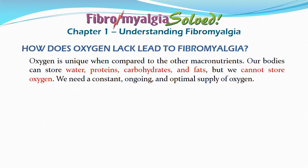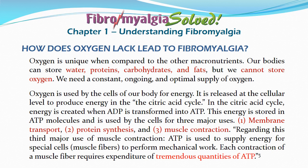These next quotes are from Guyton and Hall's Textbook of Medical Physiology. Oxygen is used by the cells of our body for energy — it is released at the cellular level to produce energy in the citric acid cycle. In the citric acid cycle, energy is created when ADP is transformed into ATP. This energy is stored in ATP molecules and is used by cells for three major uses: membrane transport, protein synthesis, and muscle contraction.